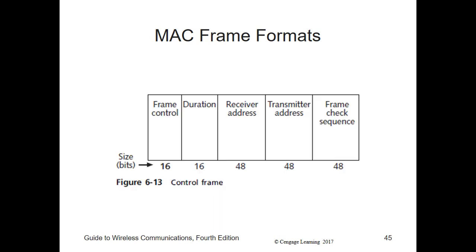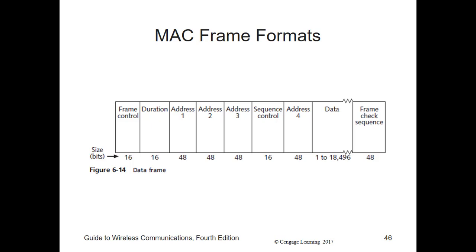Control frames are the second type of MAC frames. After association and authentication between devices and APs are established, control frames provide assistance in delivering the frames that contain the data. The Request to Send and Acknowledge frames are examples of control frames. Data frames are the third type — they carry the information to be transmitted to the destination device. The data frame format includes address fields one through four, containing the destination MAC address, source MAC address, transmitter MAC address, and receiver MAC address. The number of address fields will vary depending on the type of MAC frame being transmitted.